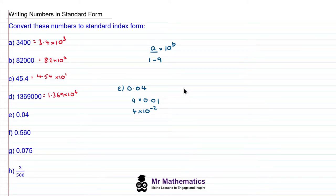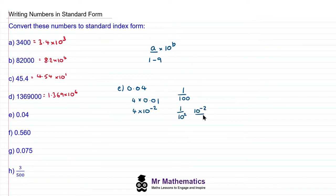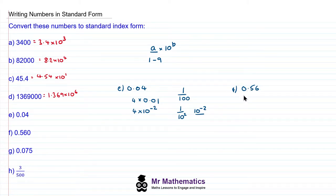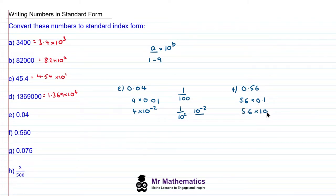We can look at this as a fraction as well. If we have one hundredth, we have 1 over 100, which would be written as 1 over 10 squared. The "1 over" part makes it 10 to the negative, so negative 2 — giving us 4 times 10 to the negative 2. For question F, we have 0.560. We don't need the trailing zero, so this becomes 5.6, where 5.6 is our number between 1 and 9. We multiply by 0.1, which is our power of 10, so that becomes 5.6 times 10 to the power of negative 1.